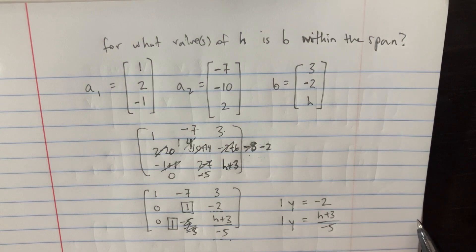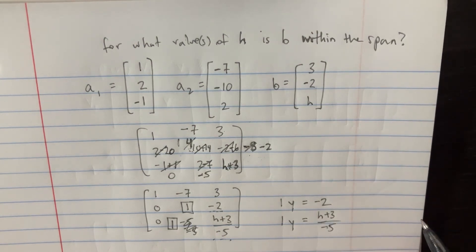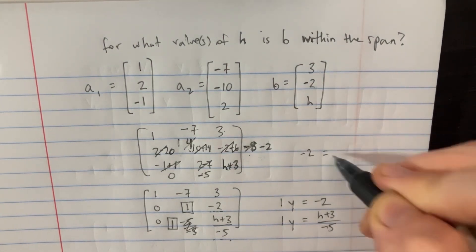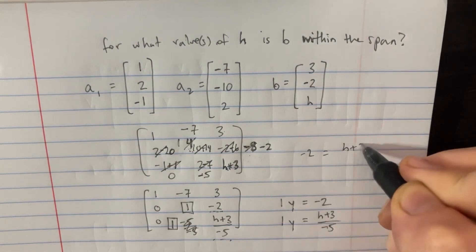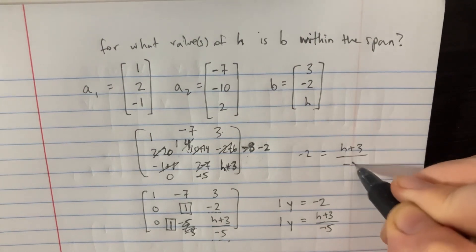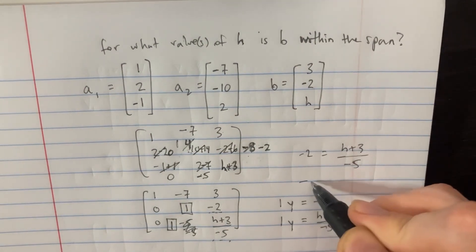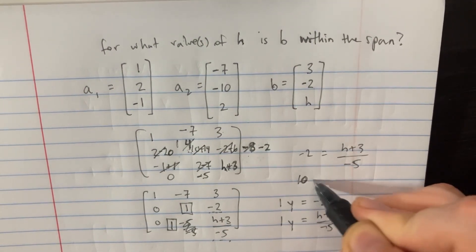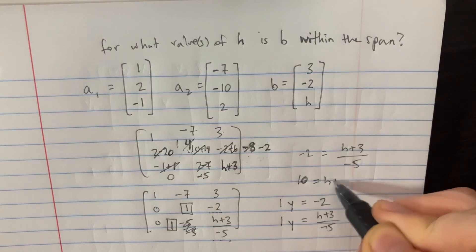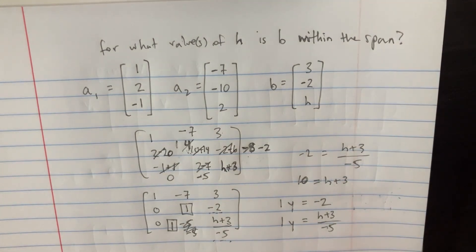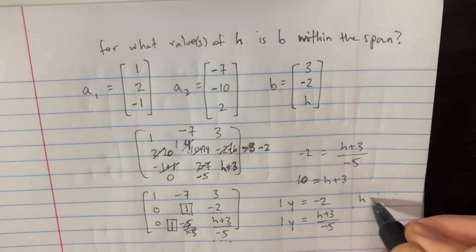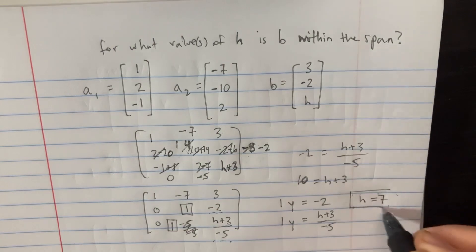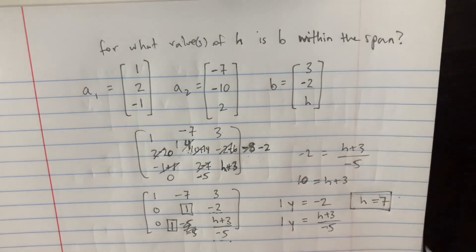Obviously these two things equal each other: negative 2 equals (h plus 3) over negative 5. Multiplying both sides by negative 5, we get 10 equals h plus 3, and therefore h must equal 7. Pretty cool — we'll see you next time.